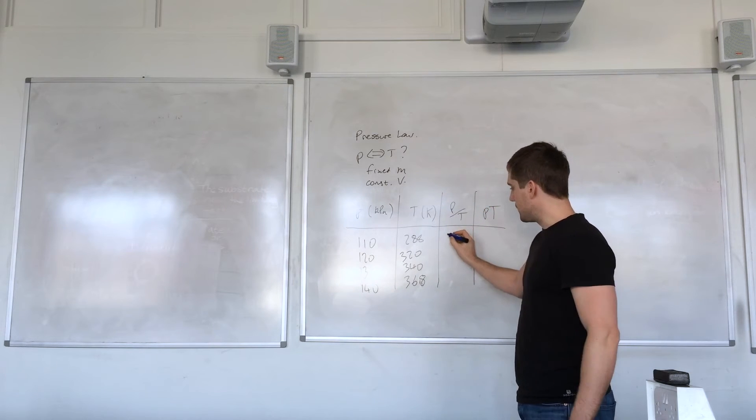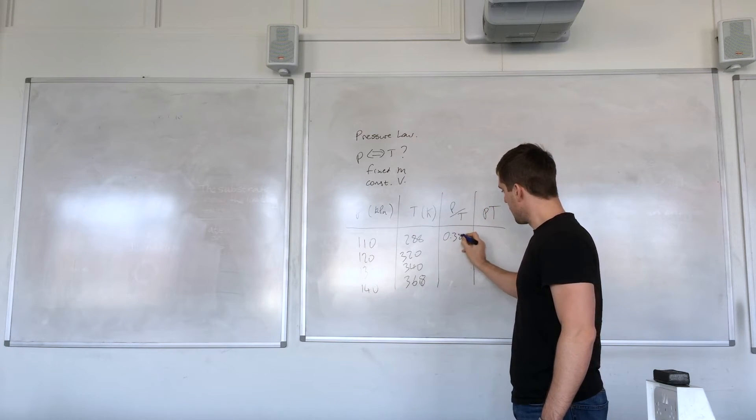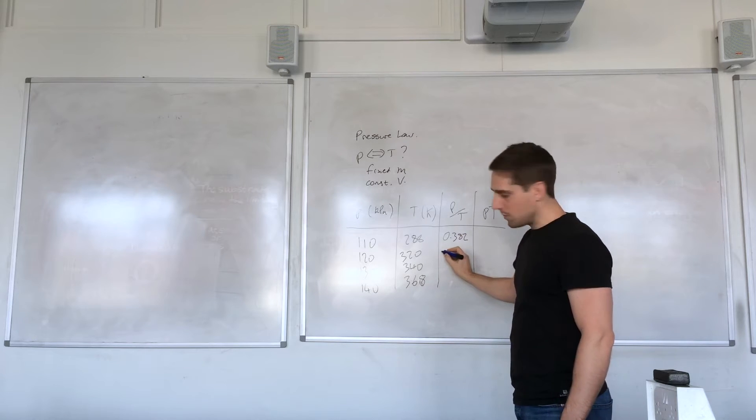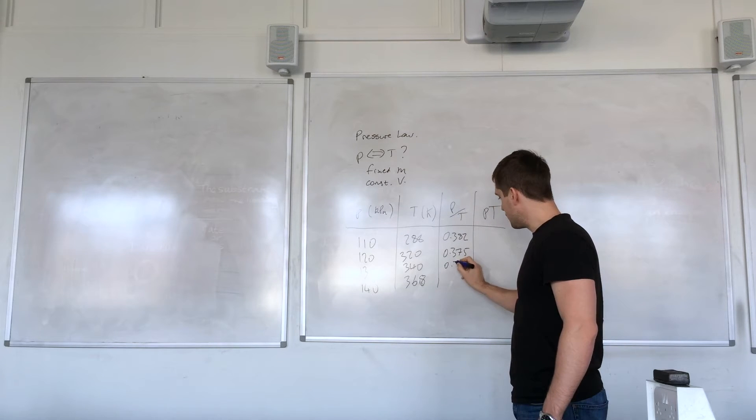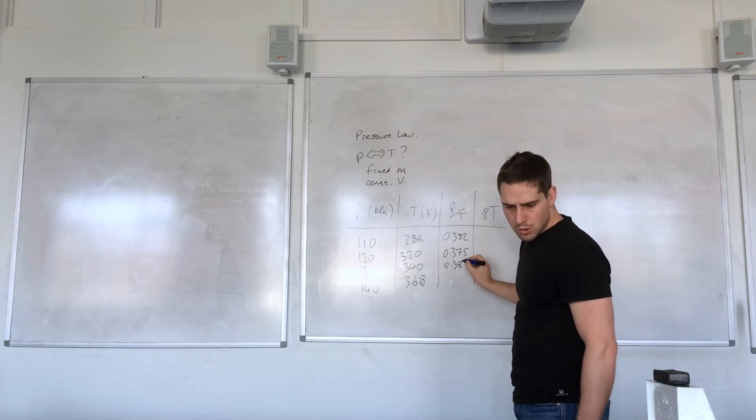I'll write these down to 3dp. 0.380, 0.382, 0.375, 0.382.